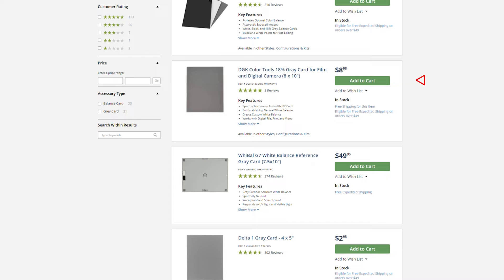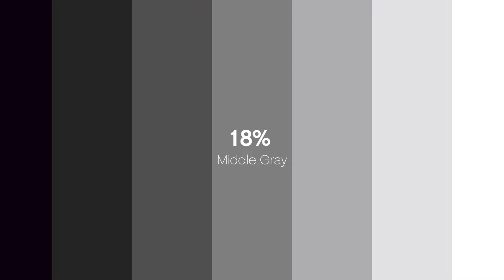One quick thing to note: it is called white balance, but it doesn't always have to be a white target. Really, 18% gray — middle gray — or brighter is a suitable target for custom white balance.